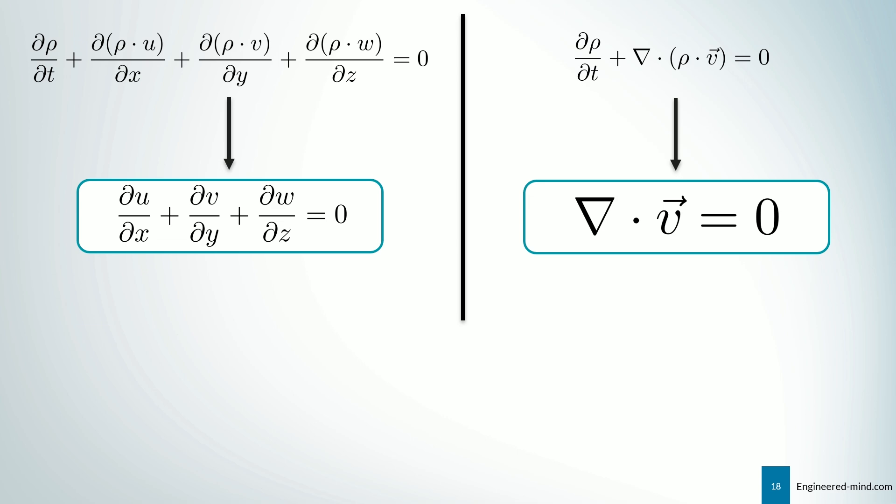In the case of steady state incompressible flow, the first term vanishes and rho can be pulled out, so we have simply the divergence of our velocity field equals zero.